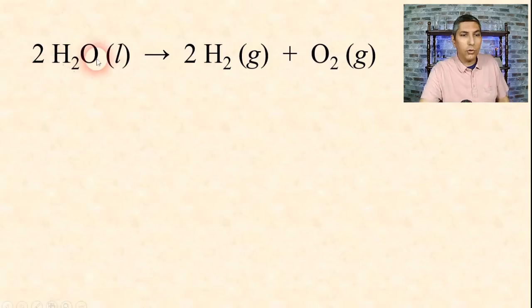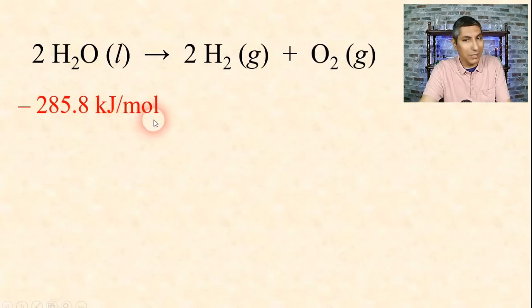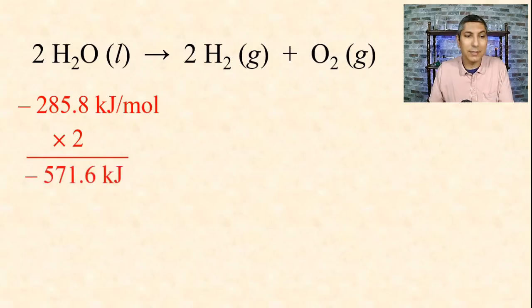Let's start with this. Once again, these enthalpies of formation are going to have to be given to you in the document or in your textbook. We'll start with H2O liquid. If we look it up in that table, we see that the enthalpy of formation of H2O liquid is negative 285.8 kilojoules per mole. Once again, it's worth repeating: they're going to have to give you that number. You're not expected to memorize this.